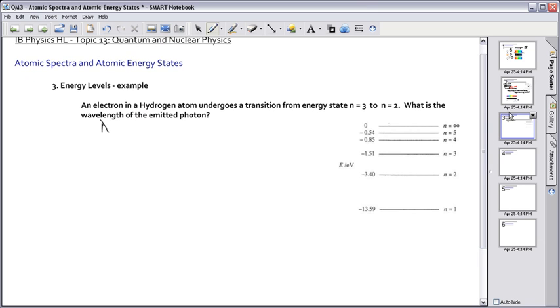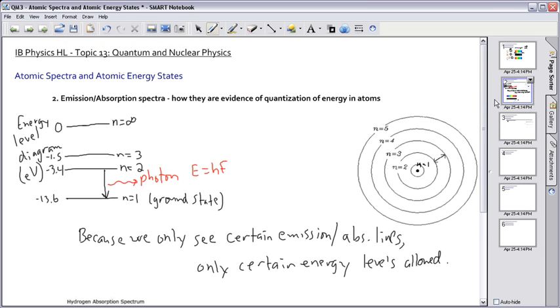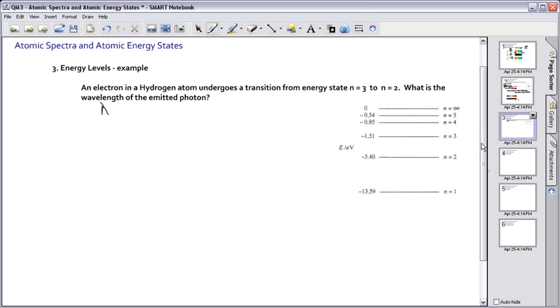Just to explain a little bit about this diagram right here again, this may seem a little bit strange, that we're talking about values here that we can do lots of different transitions. We can go from n equals 3 to n equals 2, so that's one that's possible.